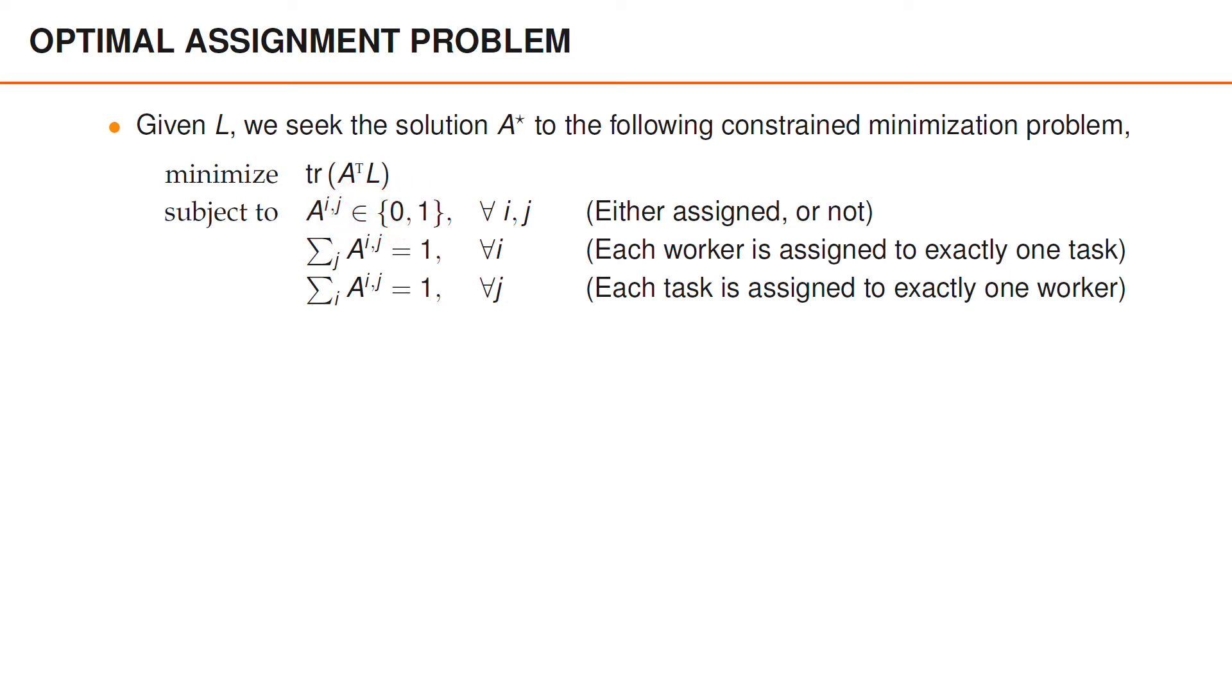The second constraint is that each worker is assigned to exactly one task. For the assignment matrix, this means that if we take a sum over the columns, for each row, this sum must be equal to 1.